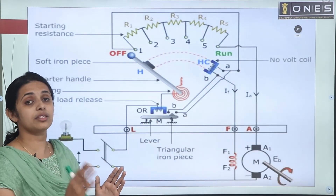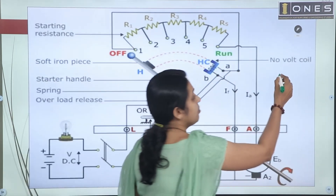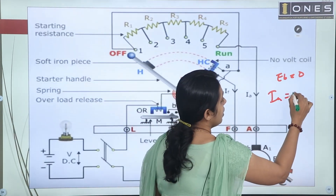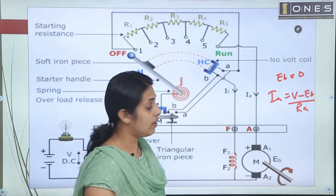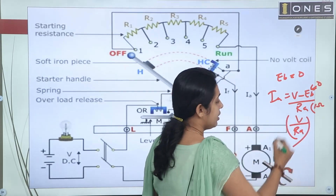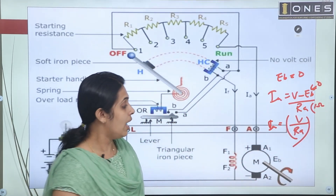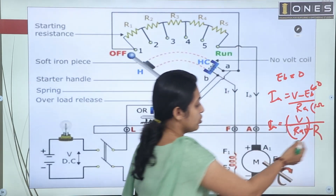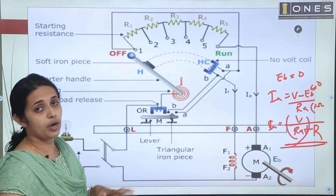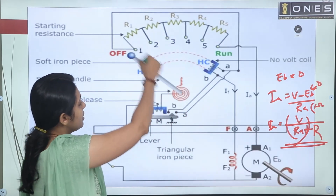At starting, Eb is zero since speed is zero, so the current I_A = V divided by R_A would be dangerously high because R_A is very small (around 1 ohm). The starter adds external resistance to the armature circuit to limit this current. The starter arm moves through contacts, progressively cutting out resistance as the motor accelerates and Eb builds up.